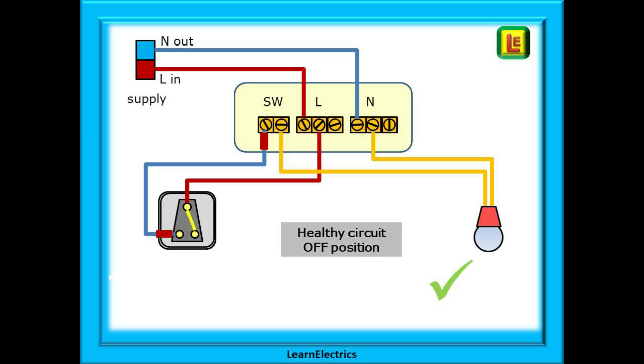All that we want to do is to get the electric that comes in on the phase to go through a switch that we can control, go through the lamp so that it lights up and then leave the circuit on the neutral wire and that's it in a nutshell. On all these drawings a correctly wired circuit has a green tick on the page and a wrongly wired circuit has a red X.